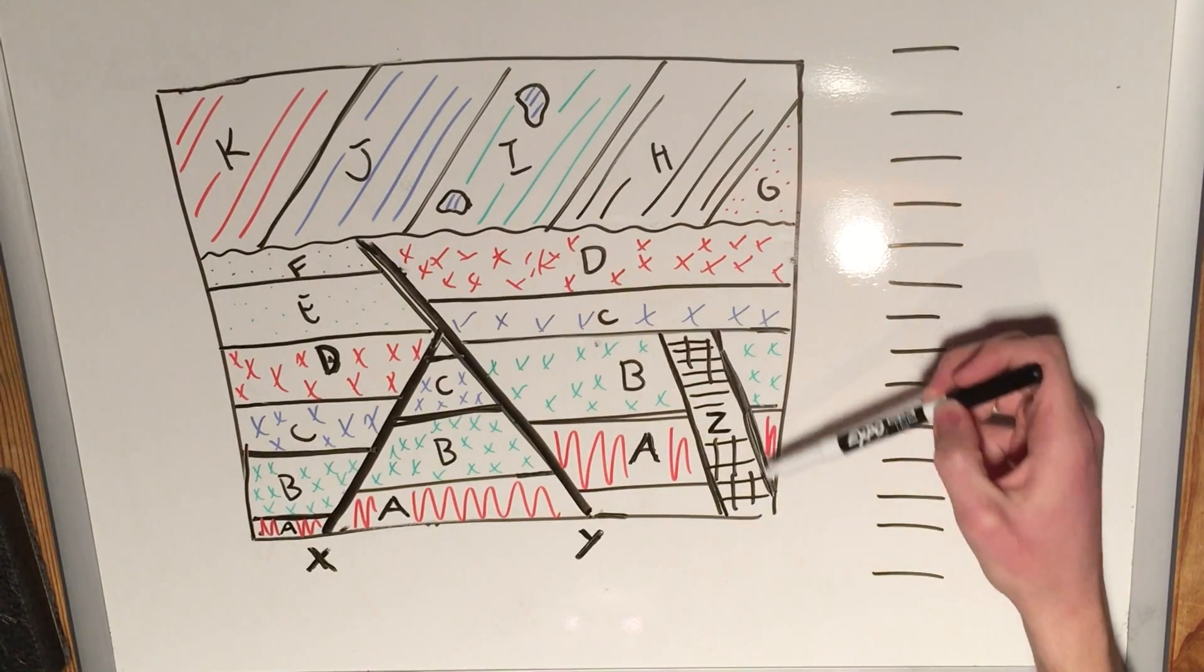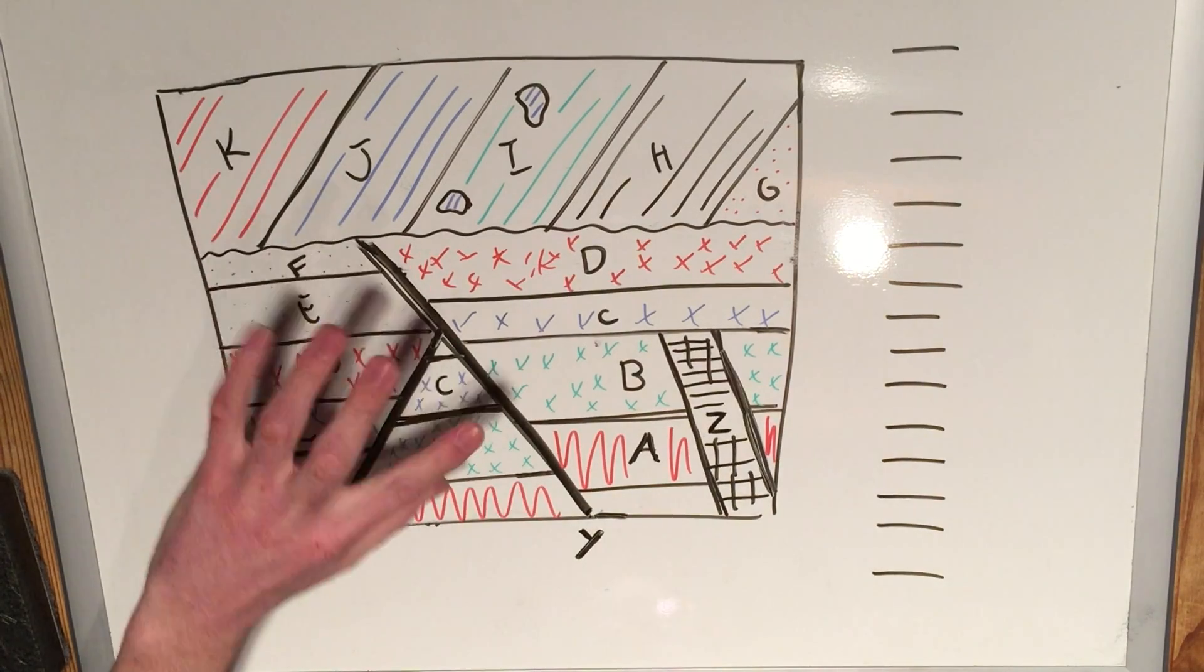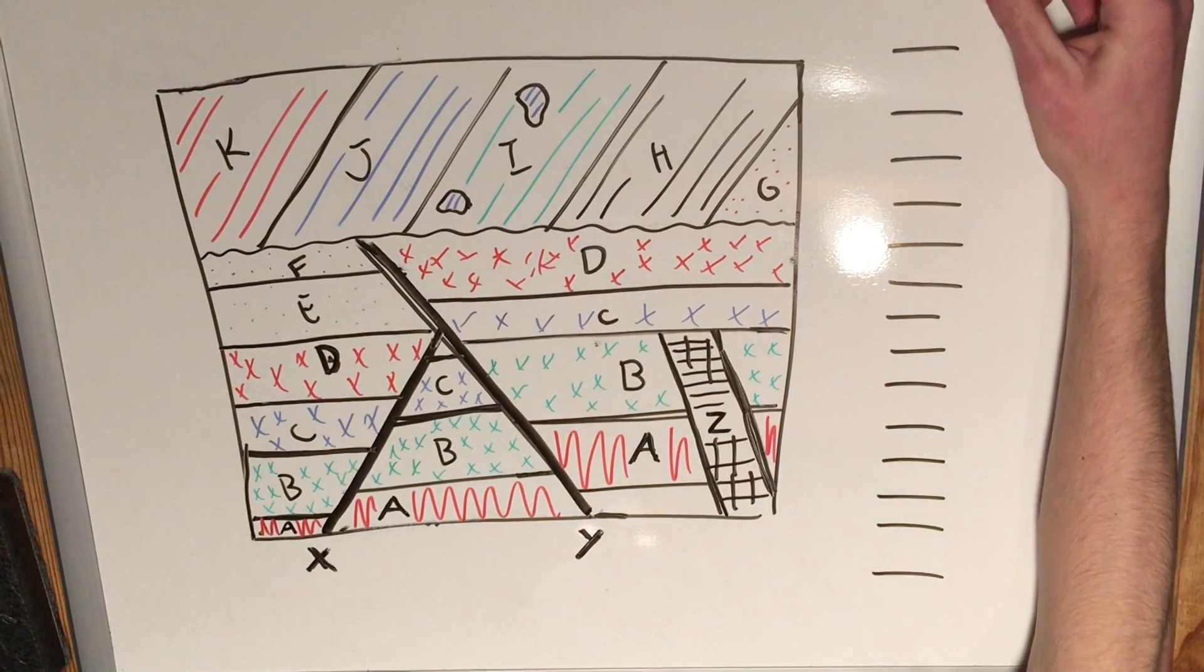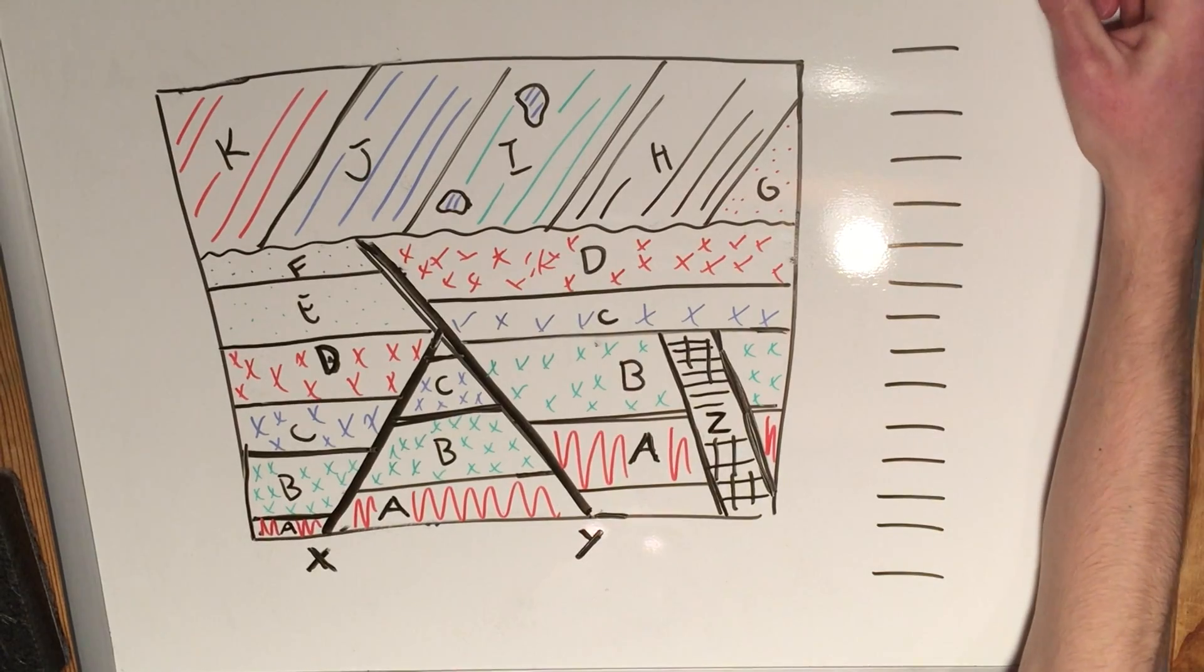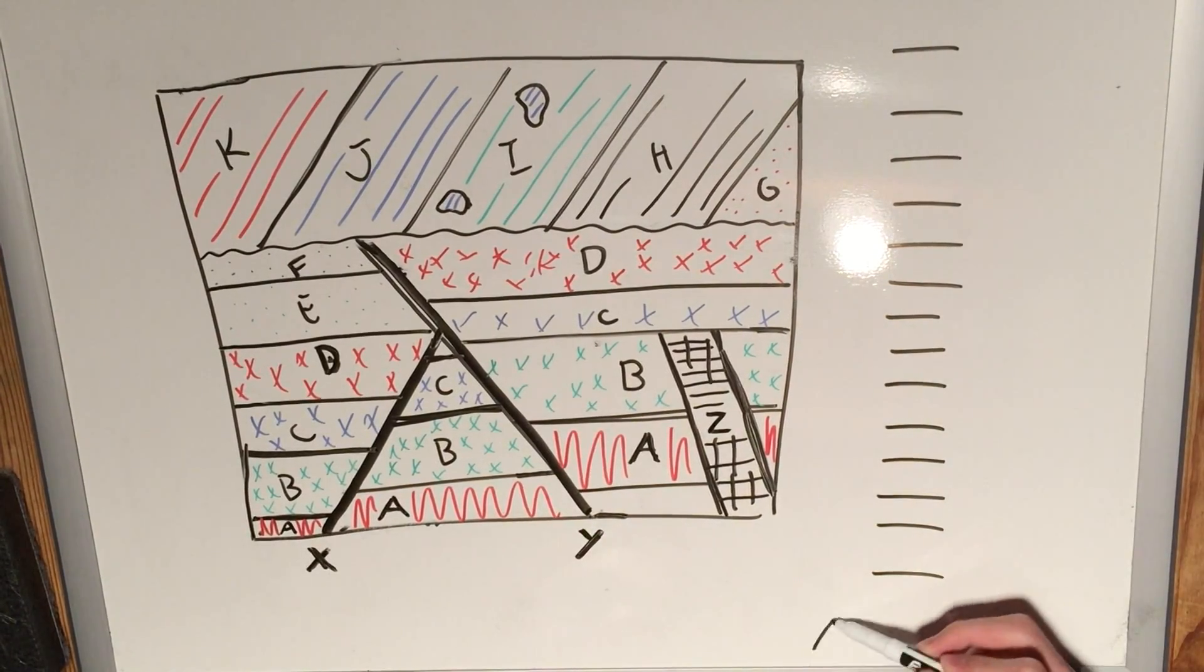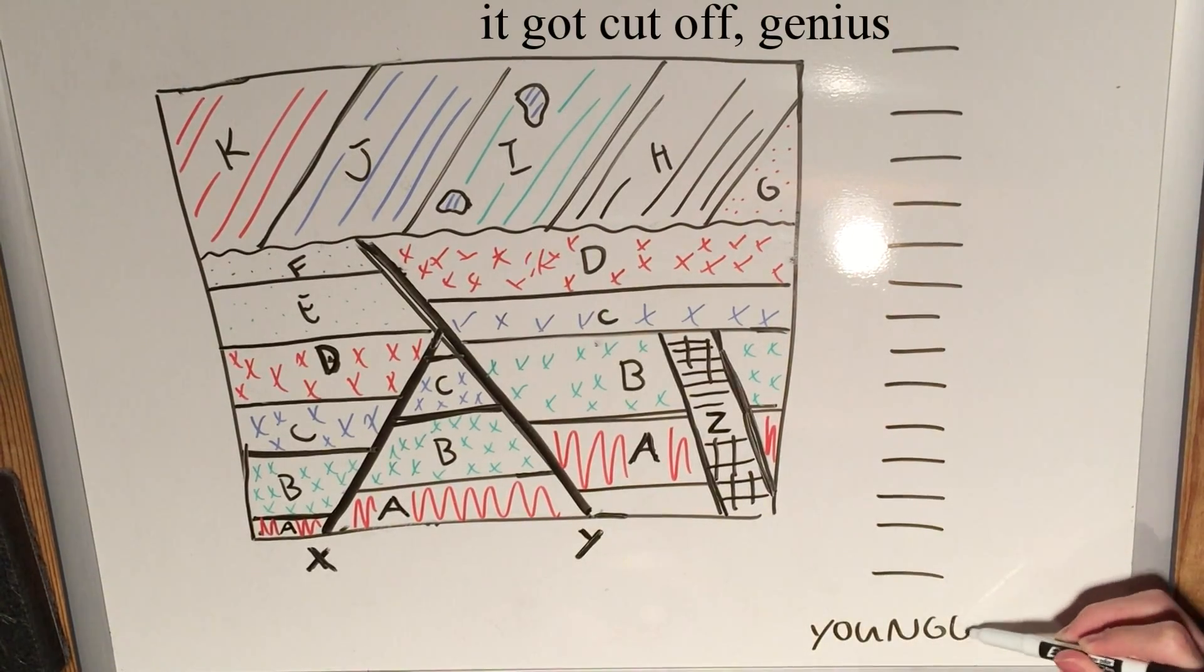And then finally, we've got a little intrusion here that is marked with Z. That should be pretty easy to deal with. Once you break it down into the parts, this sort of jumbled mess becomes a lot simpler. And we can start by, as I always say, start from the bottom up. So actually, I should have labeled this before, but we'll say the oldest will be up here, and then we'll go down to the youngest.